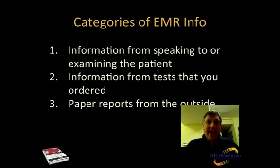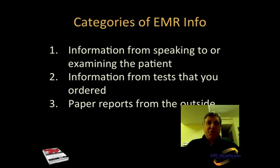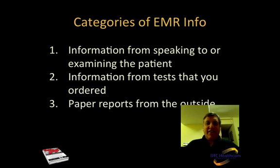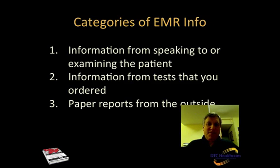There are a number of categories of electronic medical record information. I like to think there are three, essentially. There's the information from the patient encounter — you speaking or examining the patient, whether that is you, your medical assistant, nurse practitioner, or physician's assistant. The second are information from tests that you specifically ordered. And the third are paper reports from the outside, which could be previous op notes, op reports, or any type of medical information that was faxed into your office or brought in by the patient.